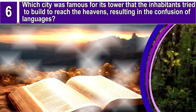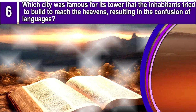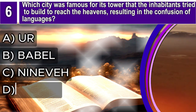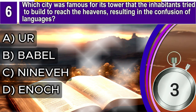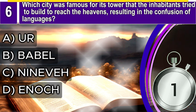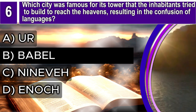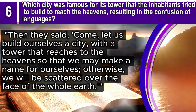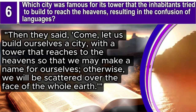Question 6. Which city was famous for its tower that the inhabitants tried to build to reach the heavens, resulting in the confusion of languages? A. Ur, B. Babel, C. Nineveh, D. Enoch. The correct answer is B. Babel. Genesis 11, verse 4 says: Then they said, Come, let us build ourselves a city with a tower that reaches to the heavens so that we may make a name for ourselves. Otherwise, we will be scattered over the face of the whole earth.